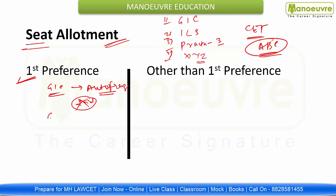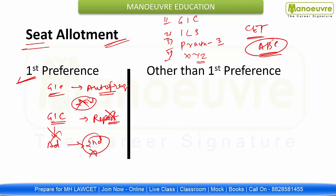If GLC was your first preference and you got it, but you didn't report and didn't pay the seat acceptance fees, then your admission to GLC will be cancelled and you cannot participate in the second round. You'll have to directly go to Round 3, which is the institutional level round. This is your first preference scenario — simple.